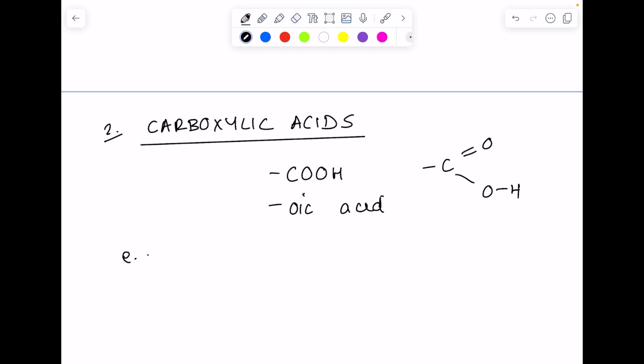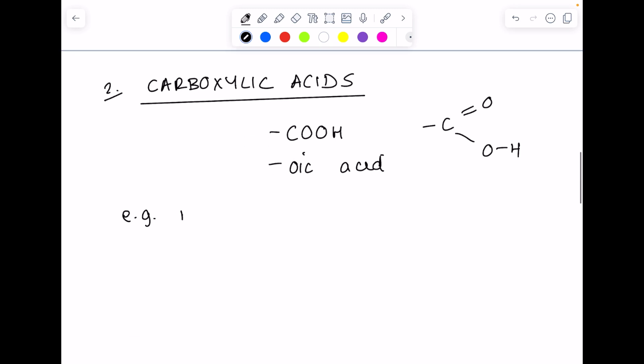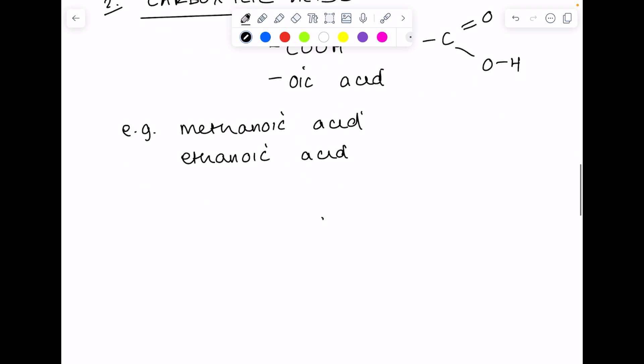So for example, methanoic acid, ethanoic acid. I'll draw ethanoic acid just to show you. Always start with that functional group. Eth means that it contains two carbons, so complete your molecule. There's the displayed formula of ethanoic acid.